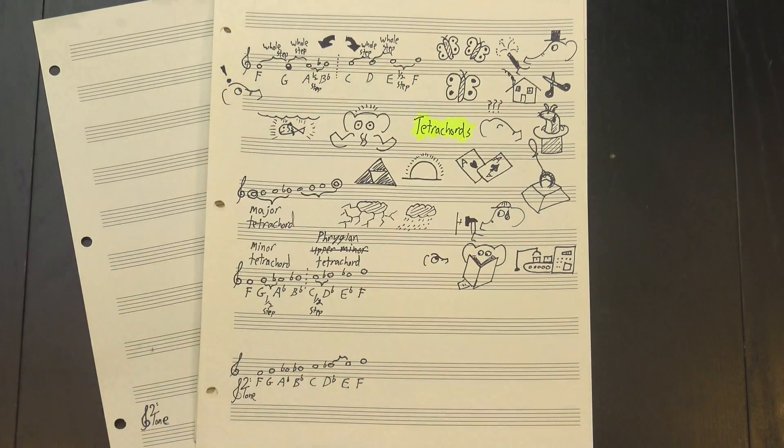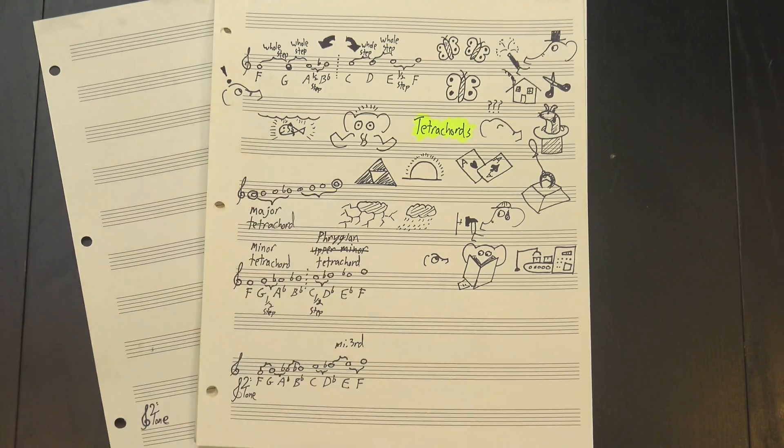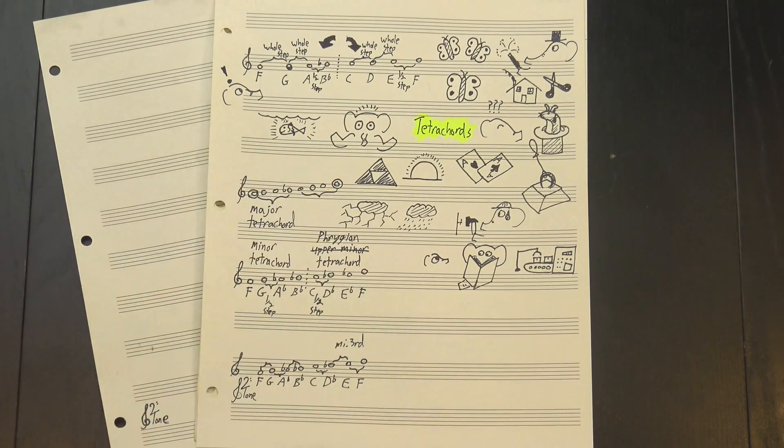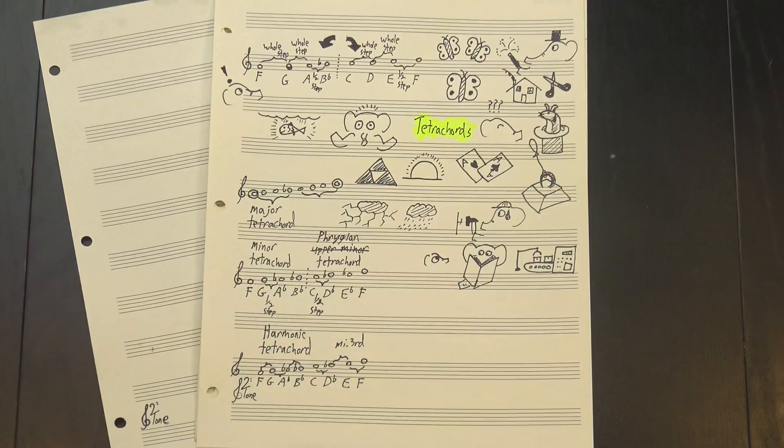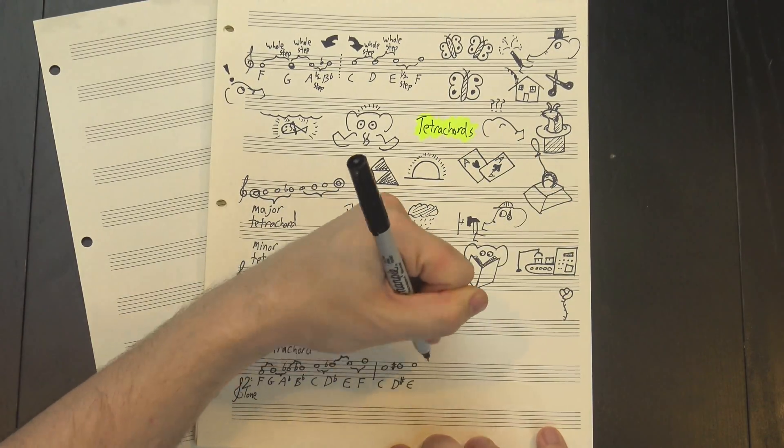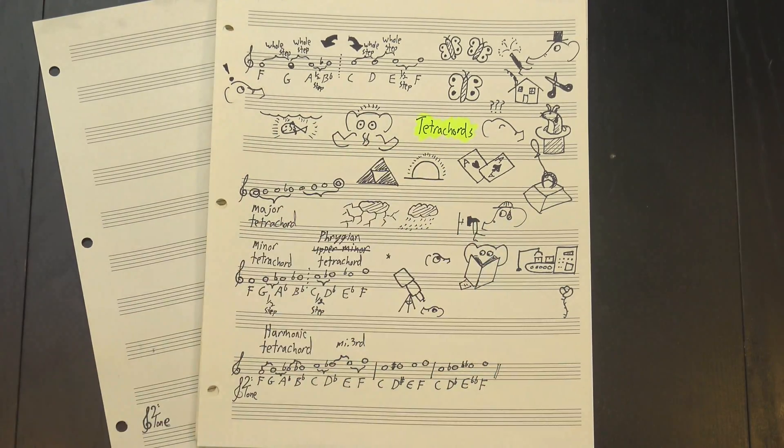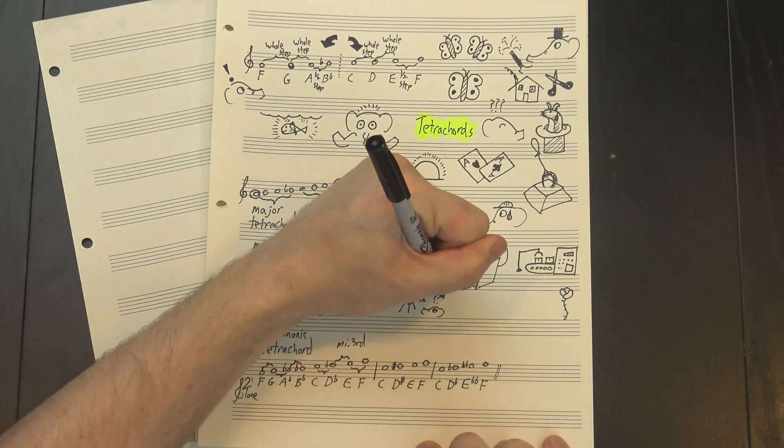Like harmonic minor has this big leap in the middle of its upper tetrachord, which doesn't exist in anything we've looked at so far. Here we've got a brand new kind of tetrachord. Instead of having two whole steps and a half step, it's got two half steps and then a minor third. This version, with the leap in the middle, is often called the harmonic tetrachord because it comes from harmonic minor. In theory, we could also put the leap at the bottom, or the top, but you don't tend to see that in actual scales, so we don't really have names for them, at least that I could find.